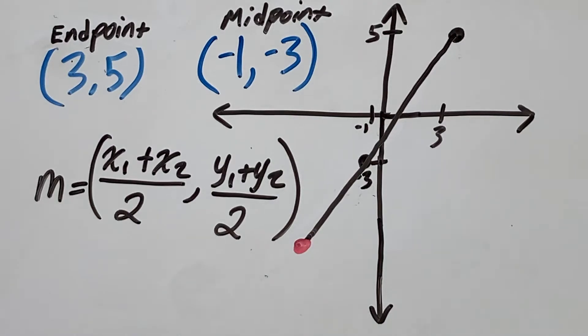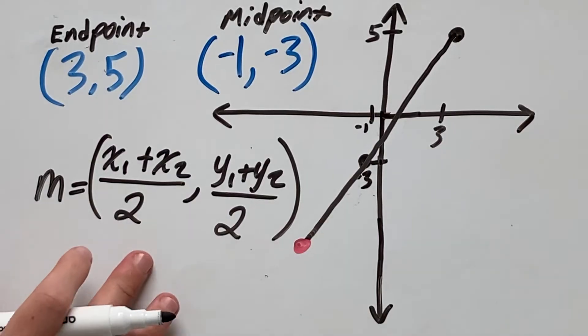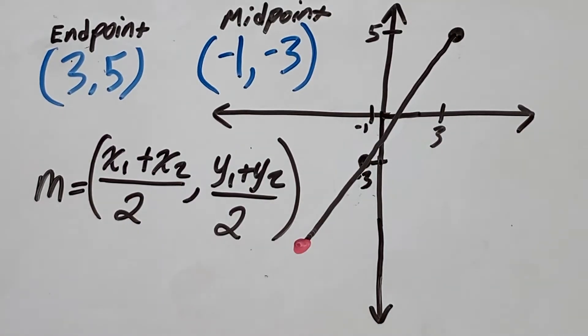So what we're going to do for this example is we're going to substitute some of these values into this formula to find the second endpoint. So if we rewrite this formula in sections, break it up into x and y, we'll do x first, we can pop our values in.